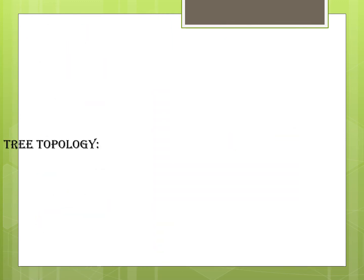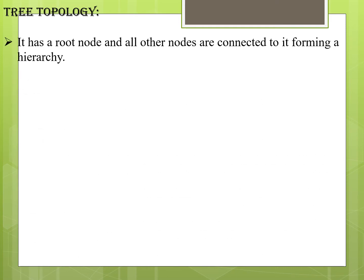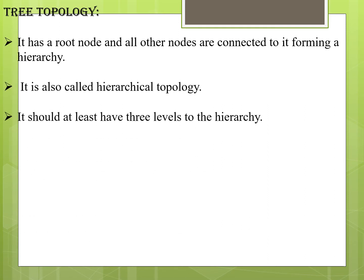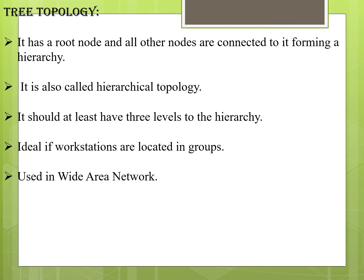Tree topology is defined as having a root node to which all other nodes are connected, forming a hierarchy. The root node is essentially the backbone cable and other nodes are the secondary hubs. It is also called hierarchical topology. It should have at least three levels of hierarchy. Ideally, workstations are organized in groups, and it is widely used in LAN connections.